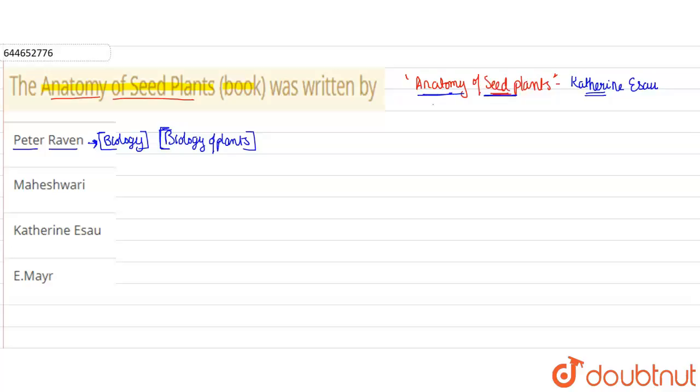Then Maheshwari - this Maheshwari is Panchanan Maheshwari. He's a very renowned botanist. Which book did he write? He actually worked in a journal, and the name of that journal was Phytomorphology. This was a journal, he worked here for many years.